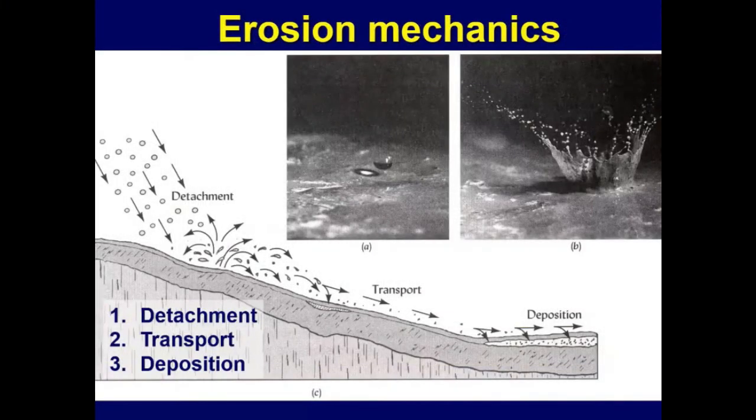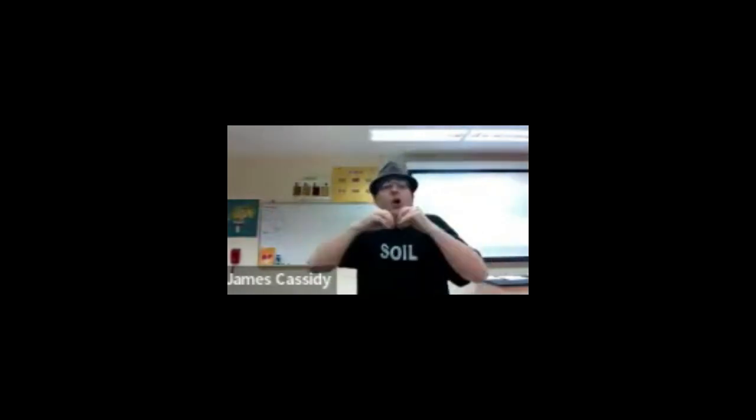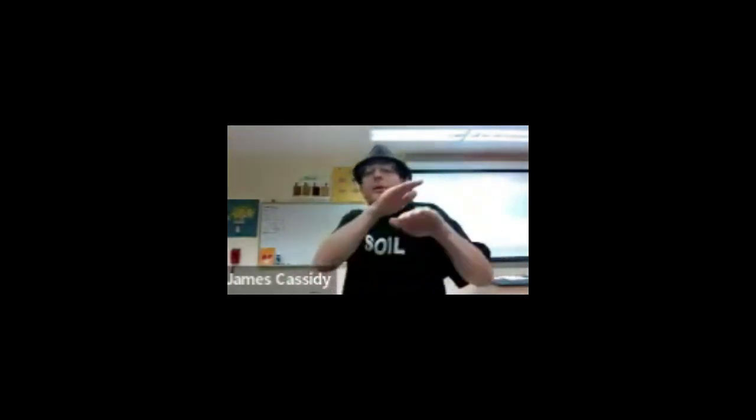Erosion is initiated by the impact of the raindrop. On bare soil, a large raindrop can go about 20 kilometers an hour, and when it hits the ground it actually explodes out air and detaches particles. The particles detached most easily are the clays, the small ones, the organic matter — the lightweight stuff that floats. Those are the two things that have the negative charge, and once detached, the flowing water takes them away.